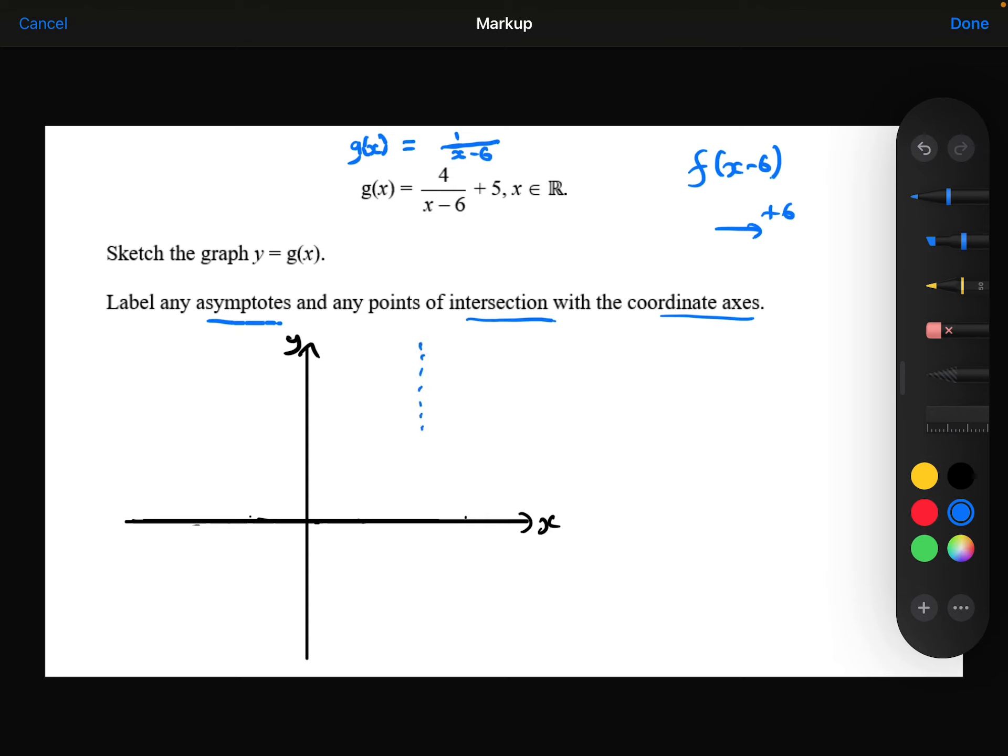So my new asymptote is now going to be over here, which is the equation x equals 6. The graph of 1 over x minus 6 would look something like this.